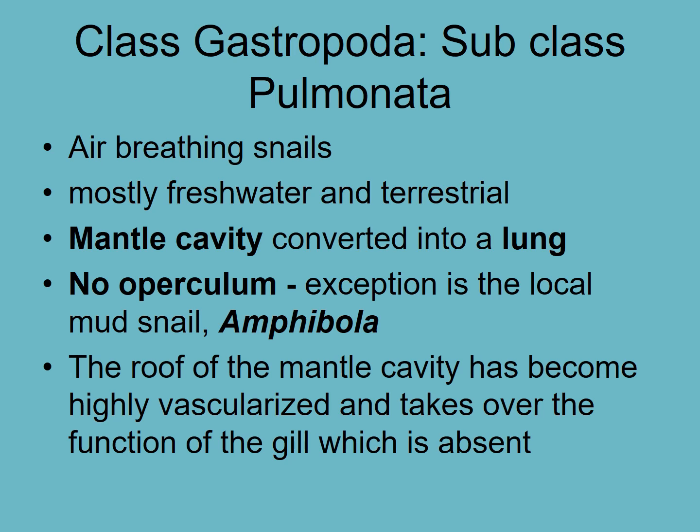And then finally we have the Pulmonata, the last subclass. These are air-breathing snails and they have no gill, but inside the mantle the mantle is very highly vascularized and it essentially acts like a gill — it's actually called a lung. It's a very vascularized surface, and the only pulmonate snail in New Zealand in the marine environment is Amphibola crenata, the mud snail.